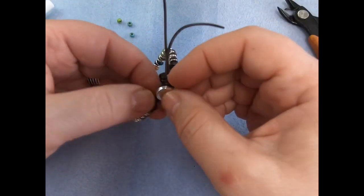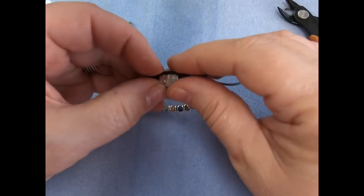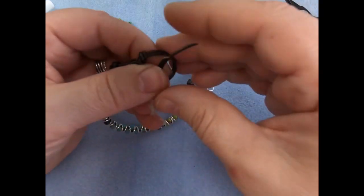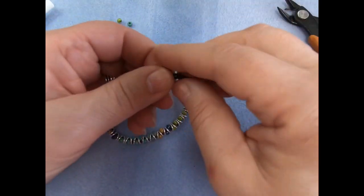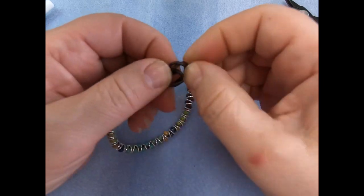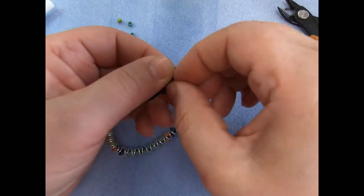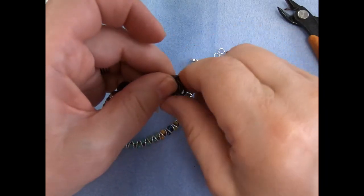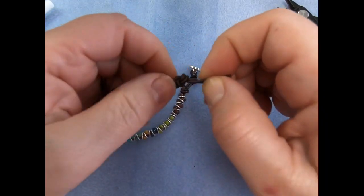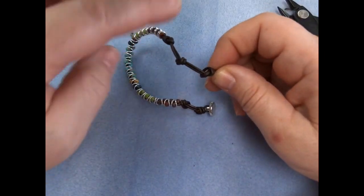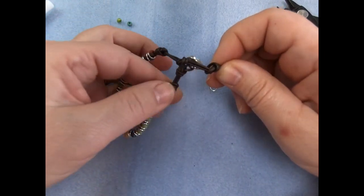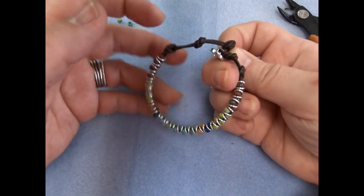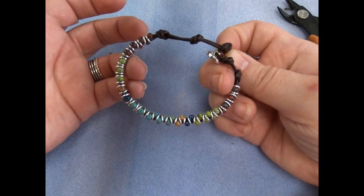Now, to make this adjustable - and I cut my leather a little bit short compared to what I gave you guys - I could just tie another knot here after the first one, and that would give me two buttonholes. So the person I am gifting it to could hook it in either spot depending on their wrist size.